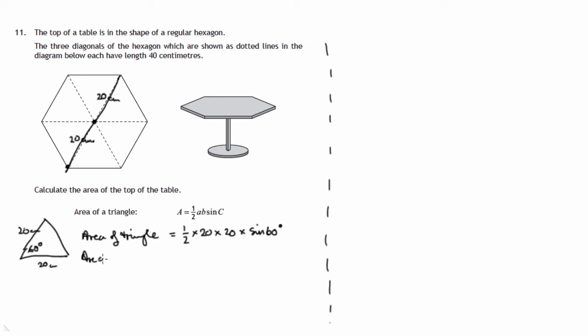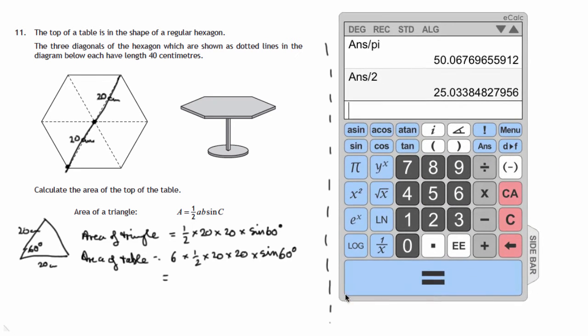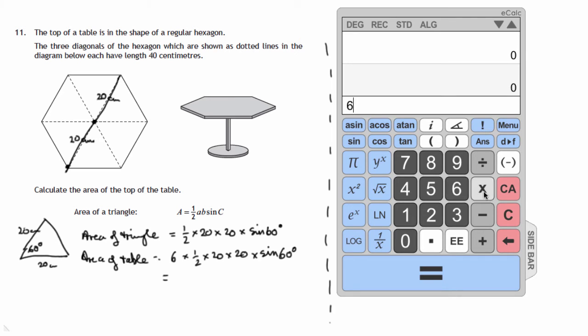So the area of the table will be six times that lot, six times a half times 20 times 20 times sine 60. So that's the calculation we're going to do. Here's a calculator. So six times a half times 20 times 20 times sine of 60.